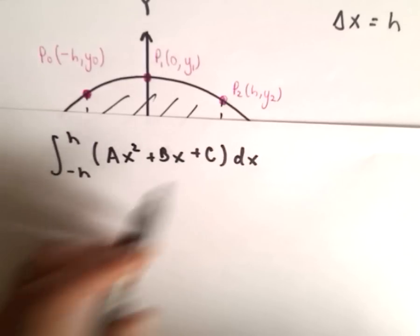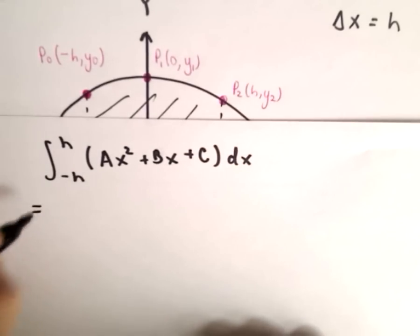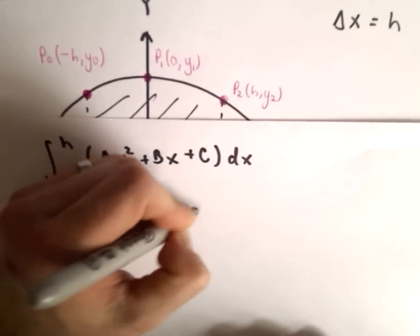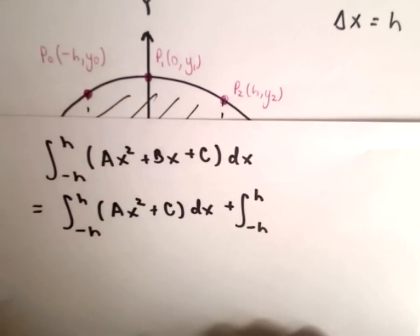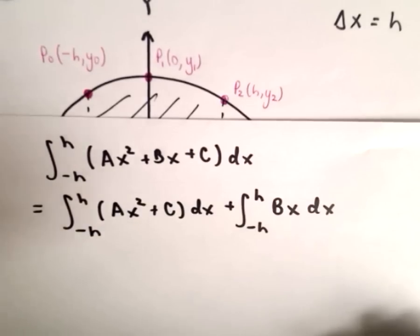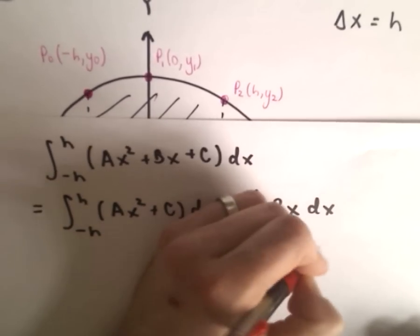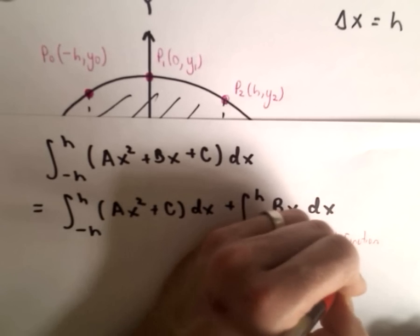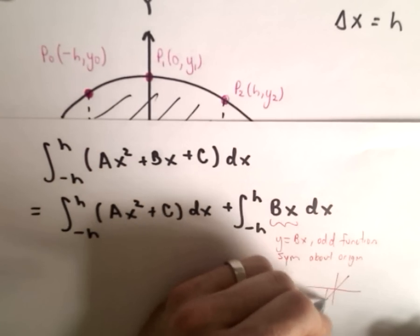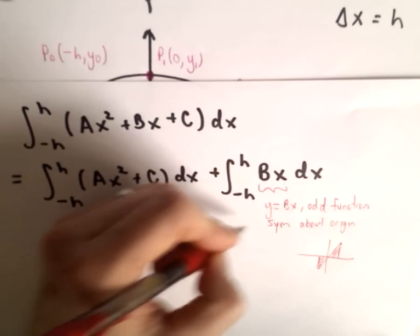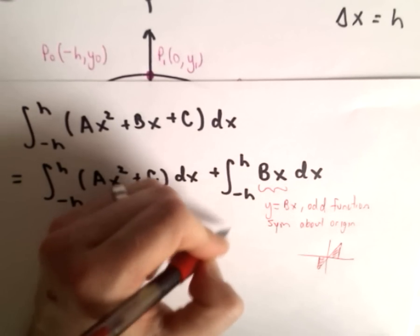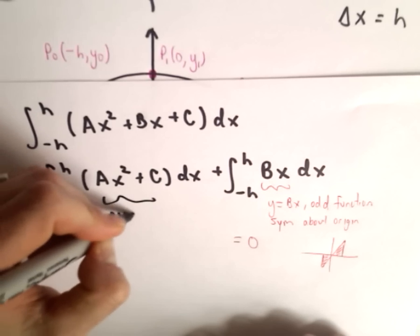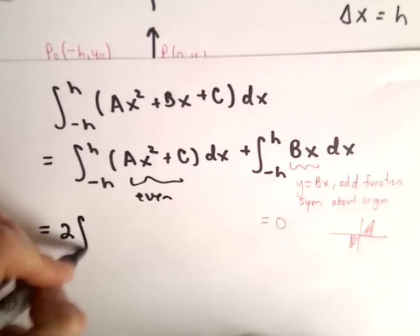You could immediately start calculating antiderivatives and substitute in negative h and positive h. Many books make an observation: split the integral into ∫(ax² + c)dx plus ∫(bx)dx. The function y = bx is an odd function — it's symmetric about the origin. If you integrate an odd function over a symmetric interval from negative h to positive h, that gives you zero. So ax² + c is an even function, and since it's even, we can multiply by two and integrate from zero to h.